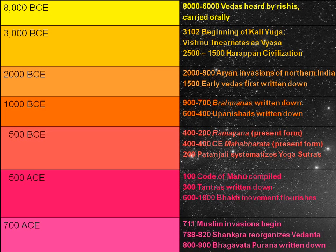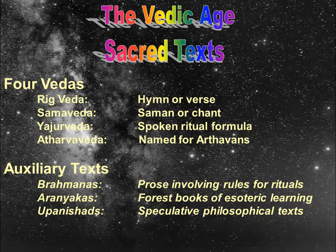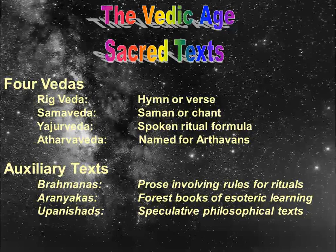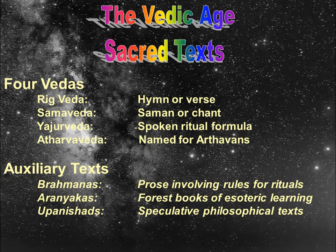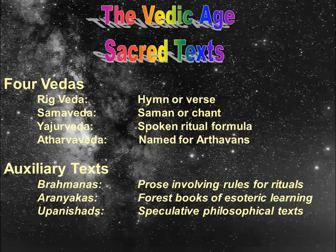Indian philosophy had its origin in an oral tradition. By 1500 BCE, the first philosophy was written in the form of poetry and hymns. The four written Vedas are the Rig Veda, the Sam Veda, the Yajra Veda, and the Arfa Veda. There are some auxiliary texts and the reflective Upanishads, of which there are 108.